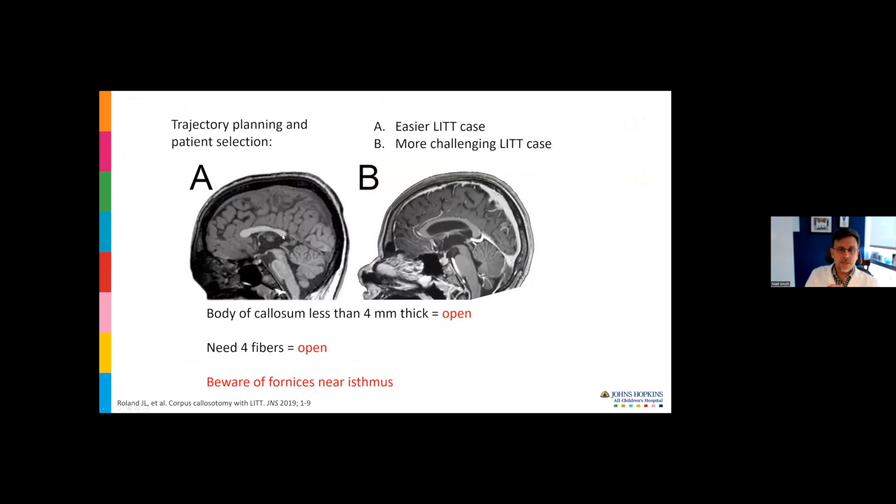Here's a patient with a Leksell head frame on, docked to the surgical robot for placement of two fibers. A couple points on trajectory planning. The patient on the left is an ideal patient for laser callosotomy—they have a nice, short, thick, straight callosum. The patient on the right is a candidate but a challenging case. It's going to take at least three fibers to get a meaningful disconnection. The callosum is thin, so you can have targeting challenges. If the body of the callosum is thinner than four millimeters, I'll do it open.